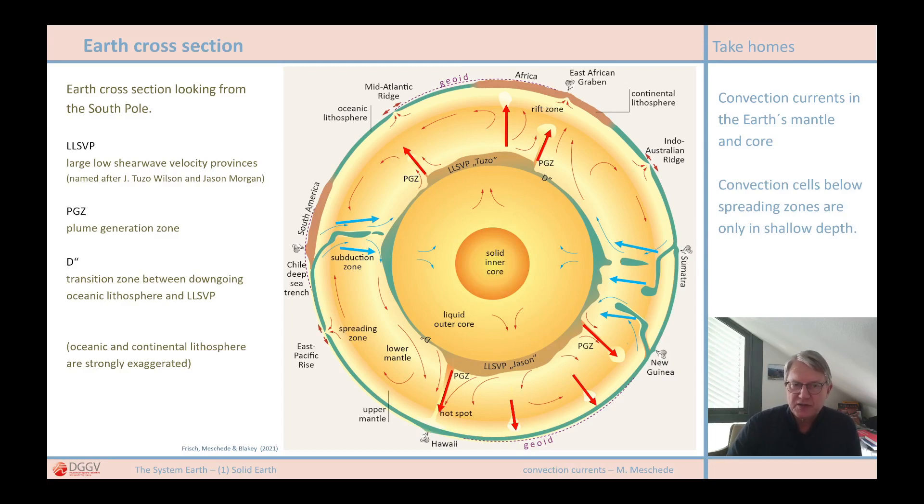In contrast, there are spreading zones with a hotspot underneath. Iceland is the best example of this. There is a hotspot directly under the Mid-Atlantic Ridge. The hotspot lifted the oceanic crust so that the ridge with the spreading zone can be observed on land today. This is one of the very few places on Earth where this is possible. Normally, the spreading zones on the Mid-Atlantic Ridge are at water depth of over 2000 meters.